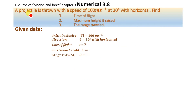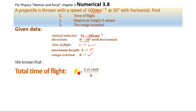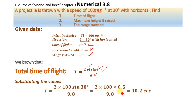Now we have the given values: the initial velocity VI = 100 meters per second, and the angle with the horizontal θ = 30 degrees. We will determine time of flight, maximum height, and range. The total time of flight is T = 2·VI·sinθ / g. Substituting the values, the total time taken by the projectile is 10.2 seconds.